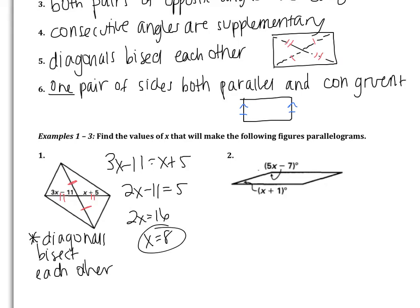Pause the video and try example 2 on your own. Make sure you look at the six ways above and determine which one applies. It's obviously not opposite sides congruent because we have two angles. Pause the video, try it on your own, and come back when you're finished.